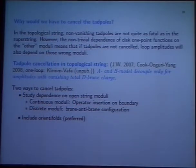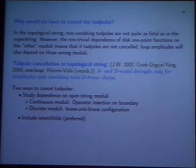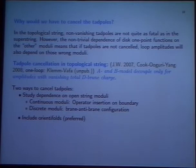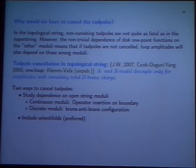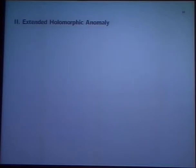There are essentially two ways to cancel tadpoles. The first is to study dependence on continuous open string moduli — inserting operators on the boundary of the worldsheet. There is an alternative which is a discrete version: taking differences, or studying brane-anti-brane configurations. The other way is to have orientifolds, which as I said before is the preferred way.